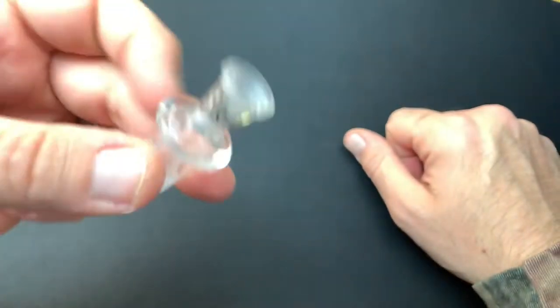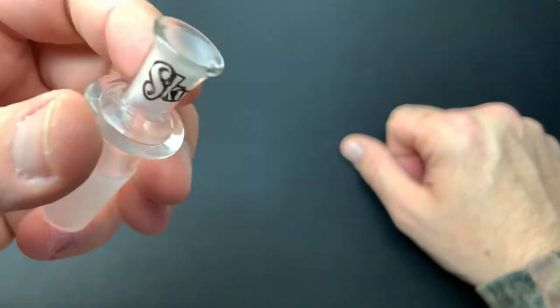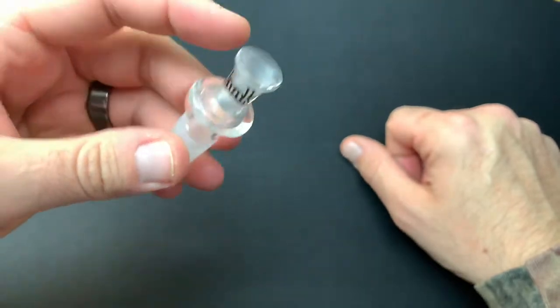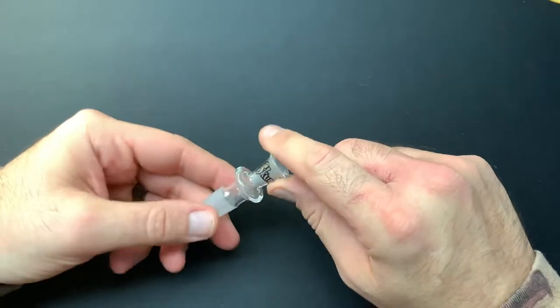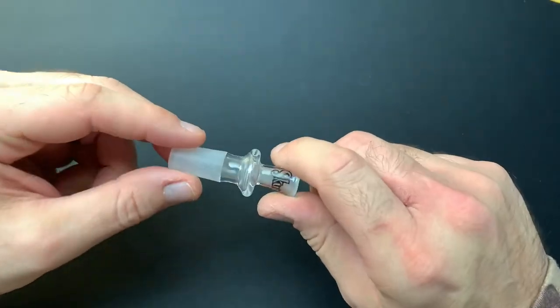I kind of wish it wasn't branded to be honest with you. Skunk really doesn't - I don't know, they're known for rolling papers. I don't really know if they're known for glass, so I do think it's interesting that they decided to brand this one little piece on the top of the tip. But we'll check it out anyway.